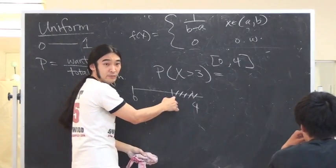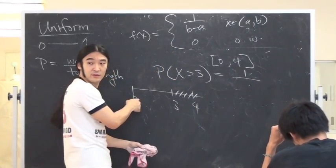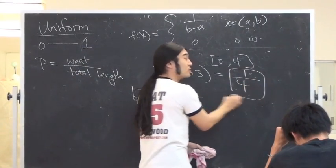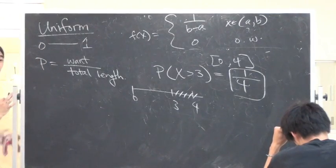What is the length of what you want bigger than 3? 1. So, the length of what you want is 1. What is the total length? 4. You're done. That's it. Are we okay with this?